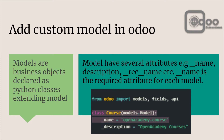Description is not required and you can define a model without it. The basic definition of a model: from Odoo import models, then write 'class Course(models.Model)', and inside the class you will have to add the name attribute: underscore name equals 'open_academy.course'. You can also add the description.